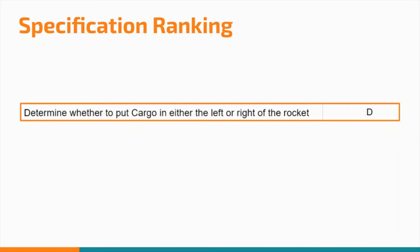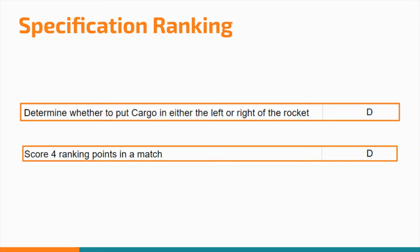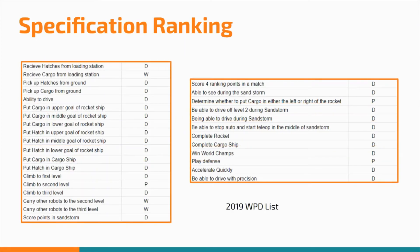Another discussion was whether we wanted to control which side we scored the cargo in the rocket. At first we believed it was definitely a demand because we wanted to score points during endgame if there wasn't a hatch on one side. After taking a step back, we realized that scoring four ranking points in a match was also a demand, meaning that in most cases all the hatches should be on in endgame — so we changed it from a demand to a prefer. You may notice we have a lot of demands on our list; as a bigger team with more resources and members, we are able to put forth the effort required. If your team is smaller, consider the amount of work your team is willing or able to put forth — but don't be discouraged, because there are still many teams who compete at the Einstein level by focusing their efforts into doing one task very well.